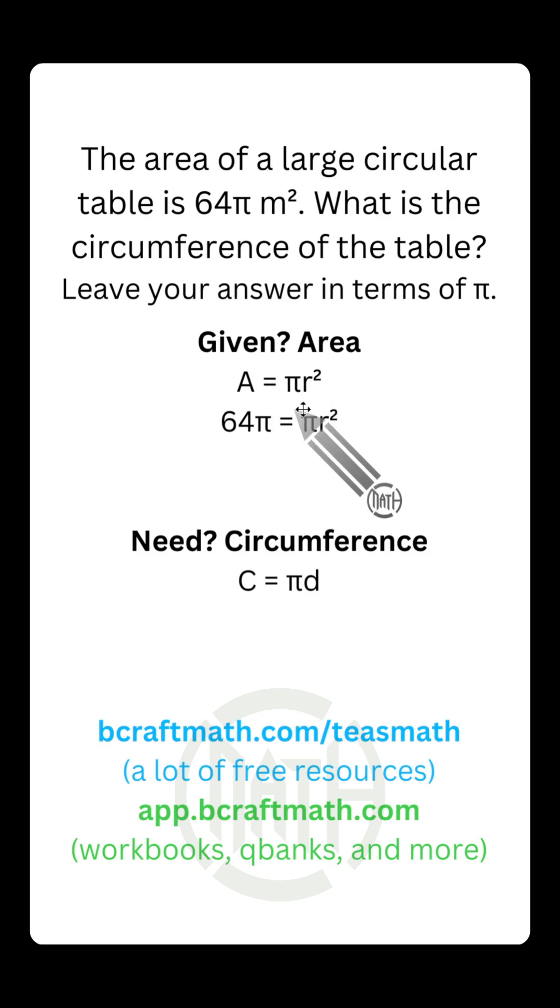Now since we have π on both sides of the equation, you can cancel these out. And essentially what you're doing is dividing both sides by π. And all that really does is it cancels out those pies, it gets rid of them. And that leaves us with 64 equals r².